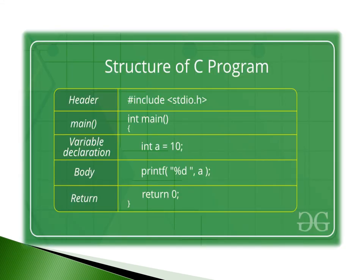This slide includes the structure of C programming. The structure includes a header section, main, body, and return part. In the header section, we need to include all the header files which are required for the C program. In the body part, we need to write our coding.